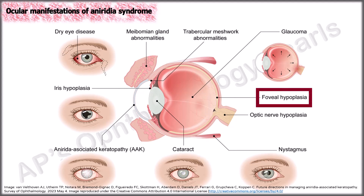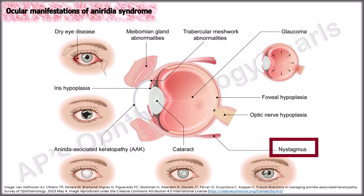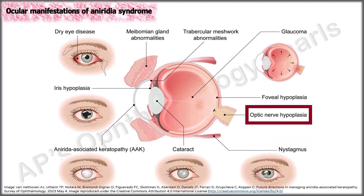Foveal hypoplasia is present in up to 90% of cases and is associated with nystagmus. Most patients have a lighter than normal fundus color and impairment of red-green and blue-yellow color vision. Optic nerve hypoplasia has been reported in up to 30% of patients and is possibly related to the severity of the foveal hypoplasia.